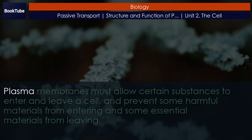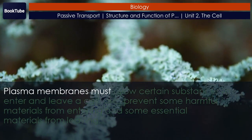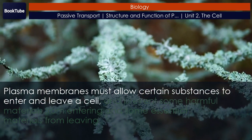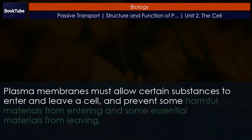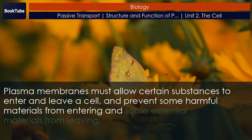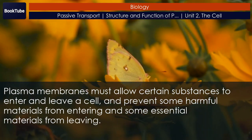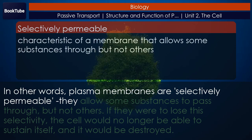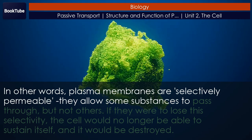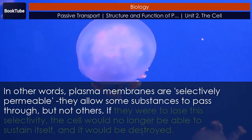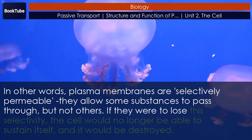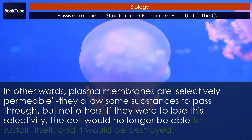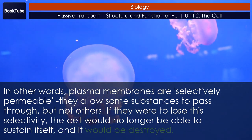Passive Transport. Plasma membranes must allow certain substances to enter and leave a cell, and prevent some harmful materials from entering and some essential materials from leaving. In other words, plasma membranes are selectively permeable — they allow some substances to pass through, but not others. If they were to lose this selectivity, the cell would no longer be able to sustain itself, and it would be destroyed.